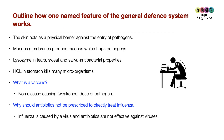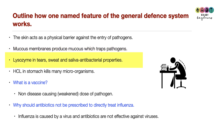Exam question: Outline how one named feature of the general defence system works. Features of the first line of defence include: skin, acting as a physical barrier against pathogens; mucus membranes, which produce mucus that traps pathogens; lysozyme in tears, sweat and saliva, which has antibacterial properties; and hydrochloric acid in the stomach, which kills many microorganisms.